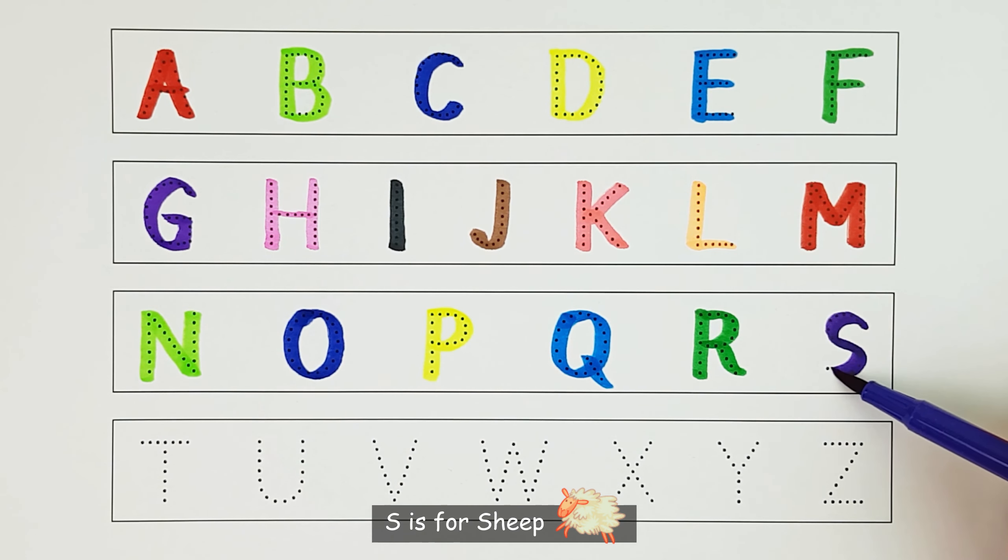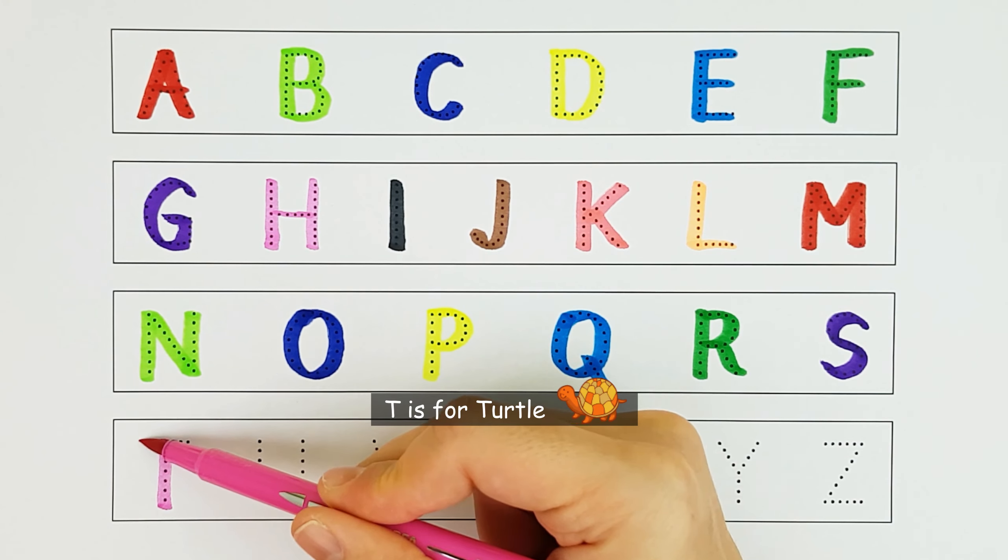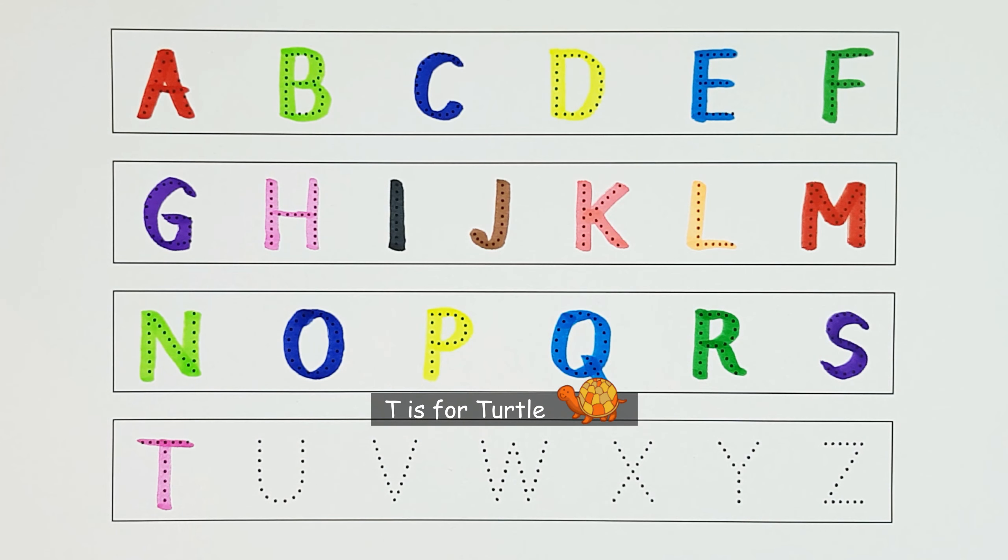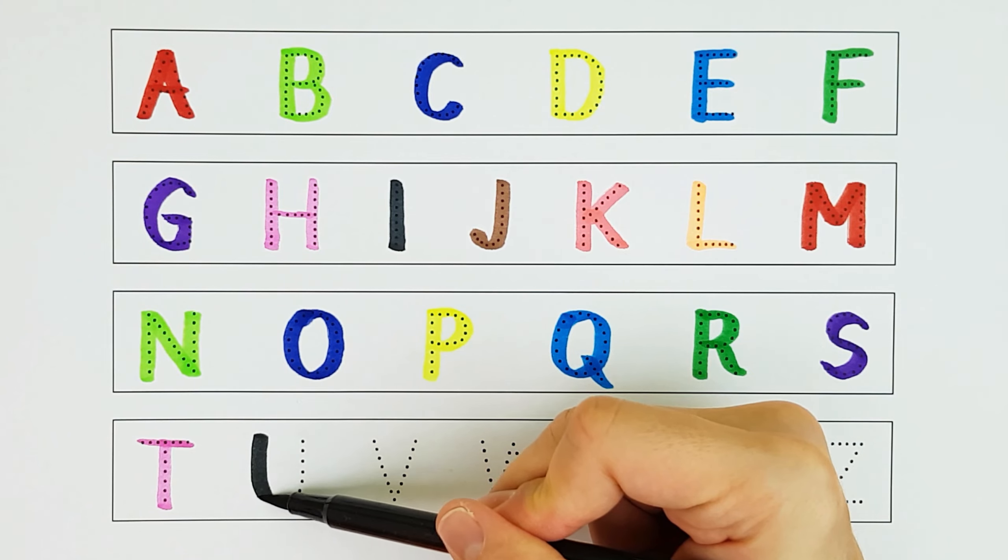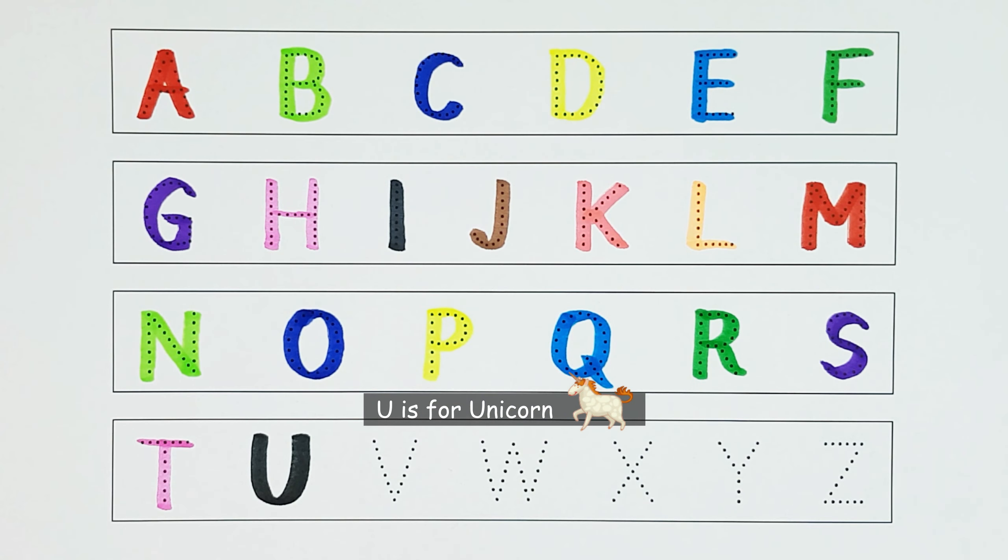S. S is for sheep. S. T. T is for turtle. T. U. U is for unicorn. U.